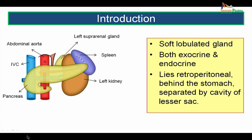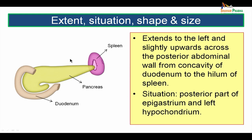Pancreas introduction. The pancreas is a gland related to the gastrointestinal system. It is a soft, lobulated gland having both exocrine as well as endocrine parts. It lies retroperitoneal, on the posterior abdominal wall behind the stomach, separated by the cavity of the lesser sac. The pancreas lies on the posterior abdominal wall related posteriorly to structures like the inferior vena cava, the abdominal aorta, the left suprarenal gland, and the left kidney.